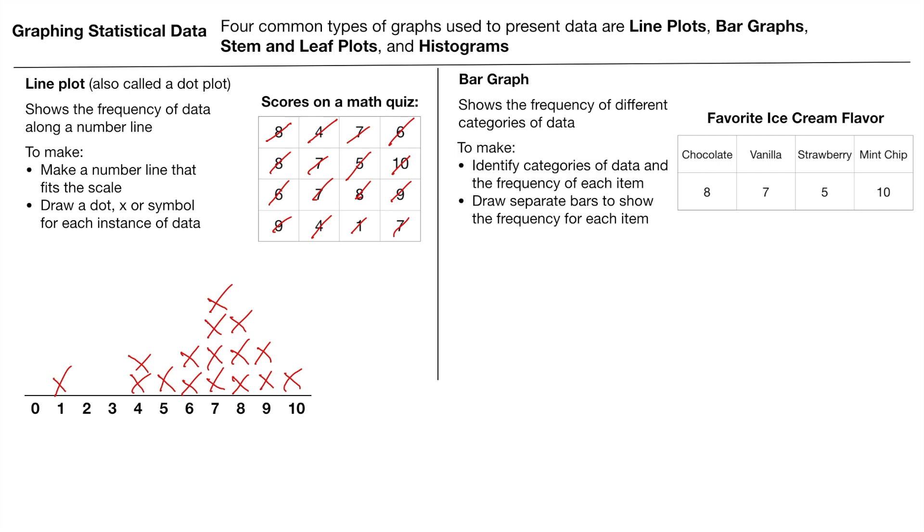To do that, again, you're just going to make categories. Right now, we've already got our categories. You can see they're presented right here. And then we're going to draw separate bars to show the frequency of each item. The key thing here is that you're drawing separate bars. So I'm just going to have my graph right there. I've got my categories.